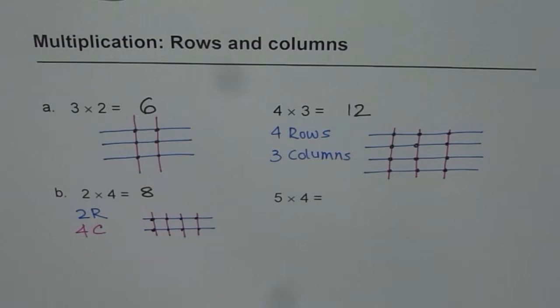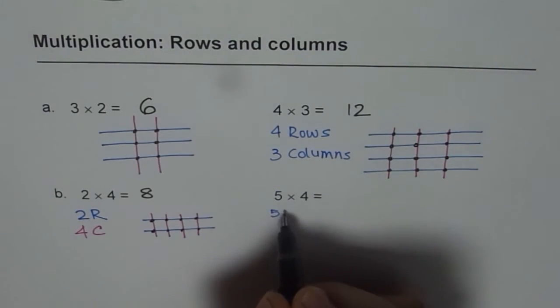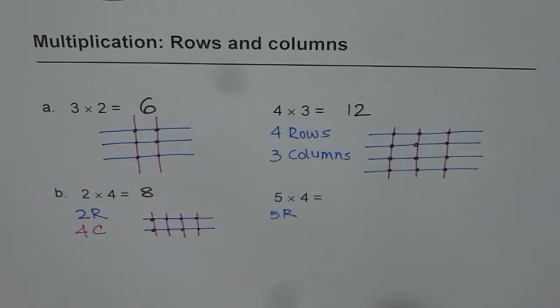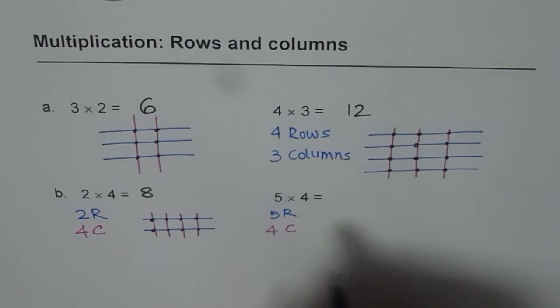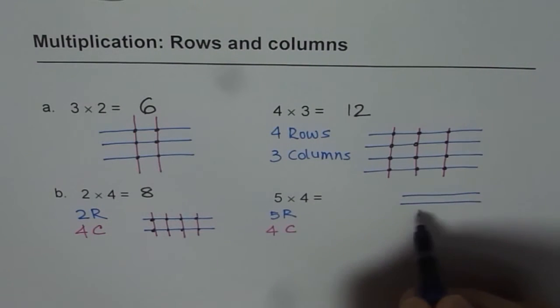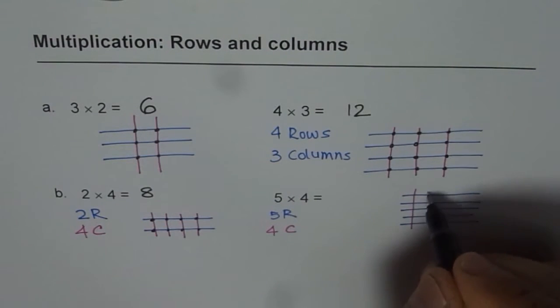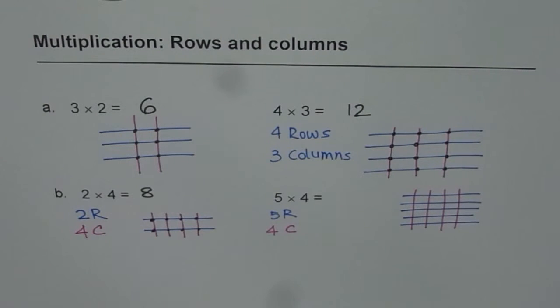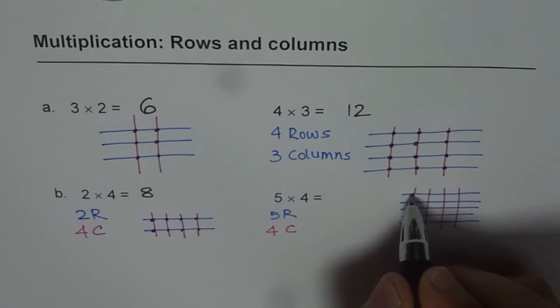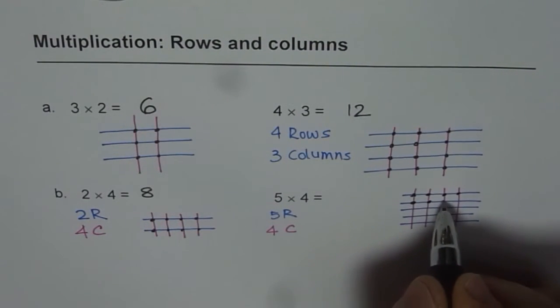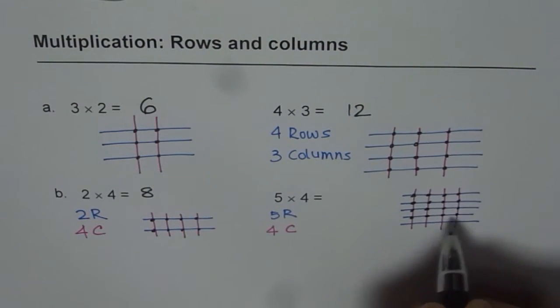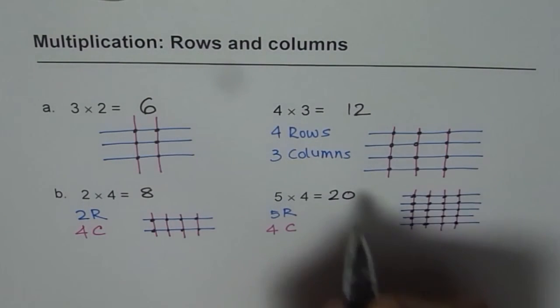Now, 5 times 4. Can you do it? 5 means 5 rows and times 4 means 4 columns. So, now, what you can do is draw 5 rows, 1, 2, 3, 4, 5, and 4 columns, 1, 2, 3, 4. At how many points do they intersect? 1, 2, 3, 4, 5, 6, 7, 8, 9, 10, 11, 12, 13, 14, 15, 16, 17, 18, 19, 20. So, 5 times 4 is 20. Isn't that simple?